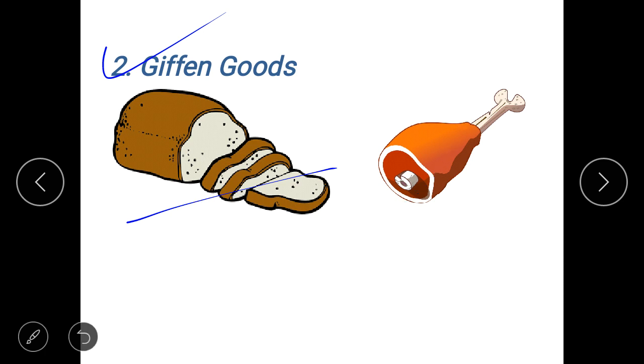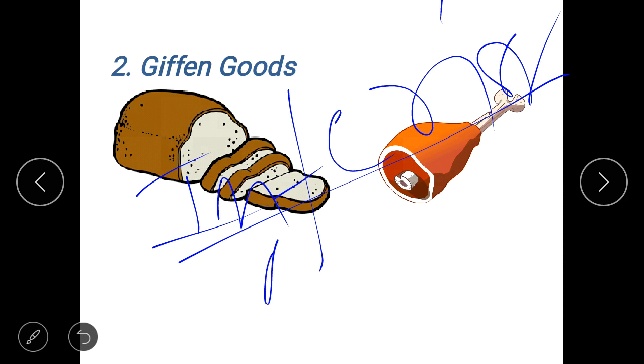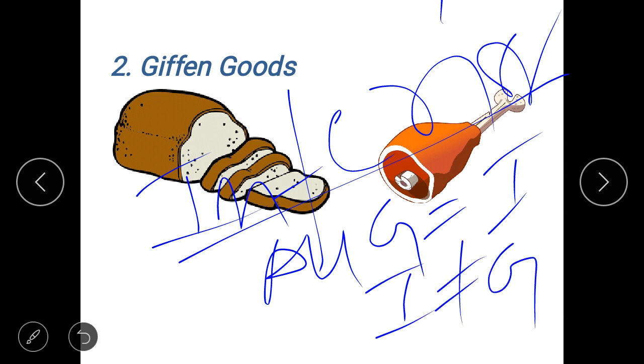Now your Giffen goods are generally your inferior goods, inferior goods that do not have a close substitute. Now you have to remember one thing here that all Giffen goods they are your inferior goods, but all inferior goods they are not your Giffen goods.